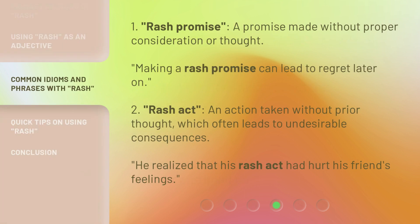1. Rash promise: a promise made without proper consideration or thought. Making a rash promise can lead to regret later on. 2. Rash act: an action taken without prior thought, which often leads to undesirable consequences. He realized that his rash act had hurt his friend's feelings.